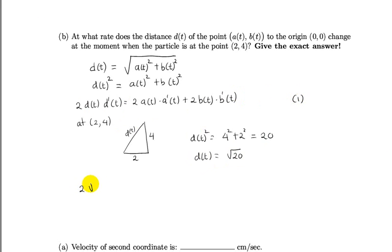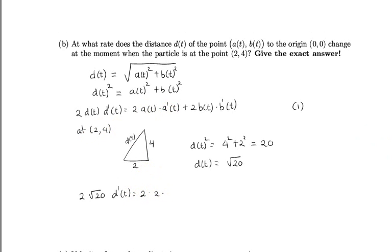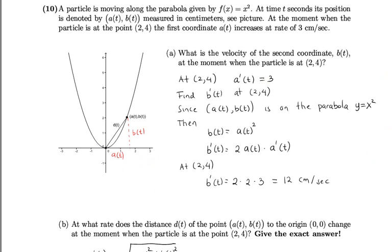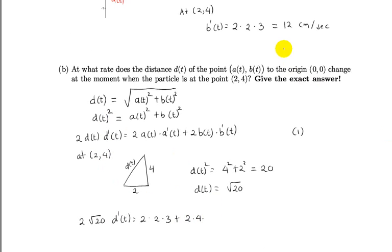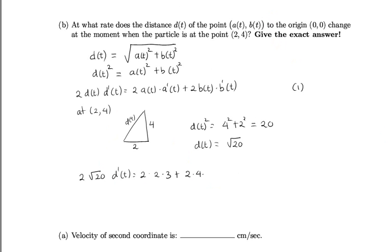Now we have all the information and we can plug into that equation. 2√20 d'(t) = 2 times a(t) - and at (2,4), a(t) is 2 - a'(t) is given, which is 3, plus 2 times b(t) - b(t) is 4 - and we have b'(t) from the first part of the problem, which is 12.